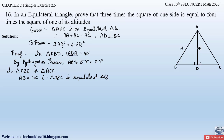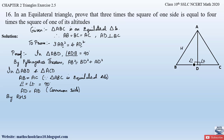AB = AC since triangle ABC is an equilateral triangle. A 90-degree angle is formed in both triangles because of altitude AD, so angle 1 = angle 2 = 90°. Side AD is common to both triangles, so AD = AD (common side). By RHS congruency criteria — right angle equal, hypotenuse equal, one side equal — triangle ABD is congruent to triangle ACD.